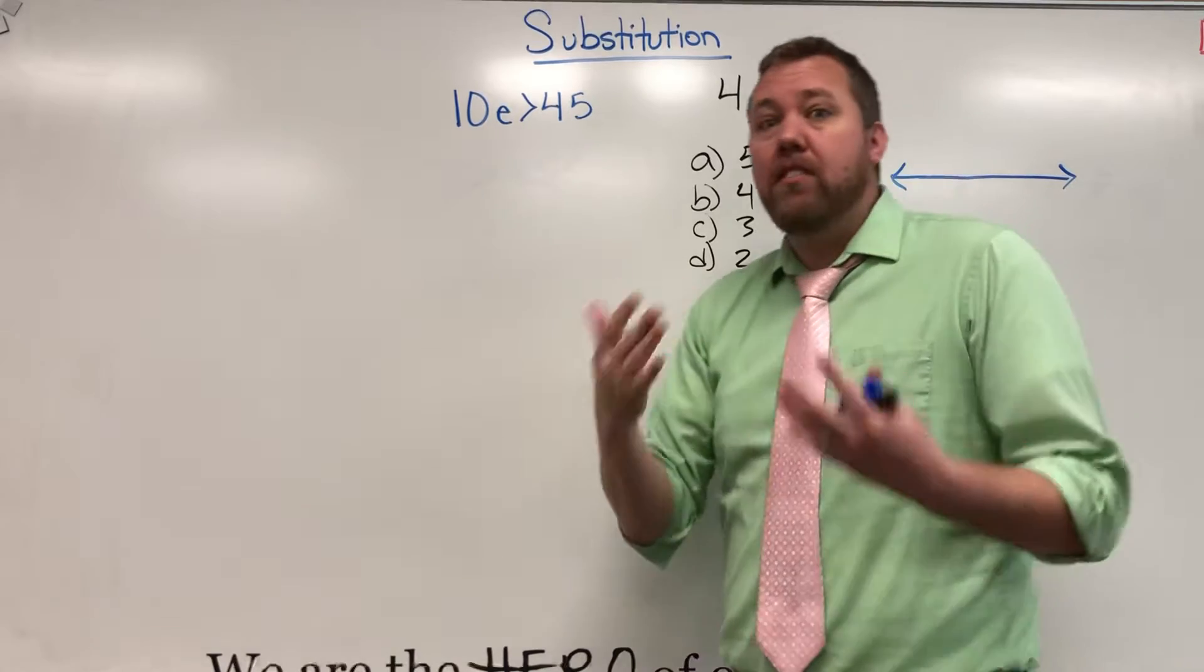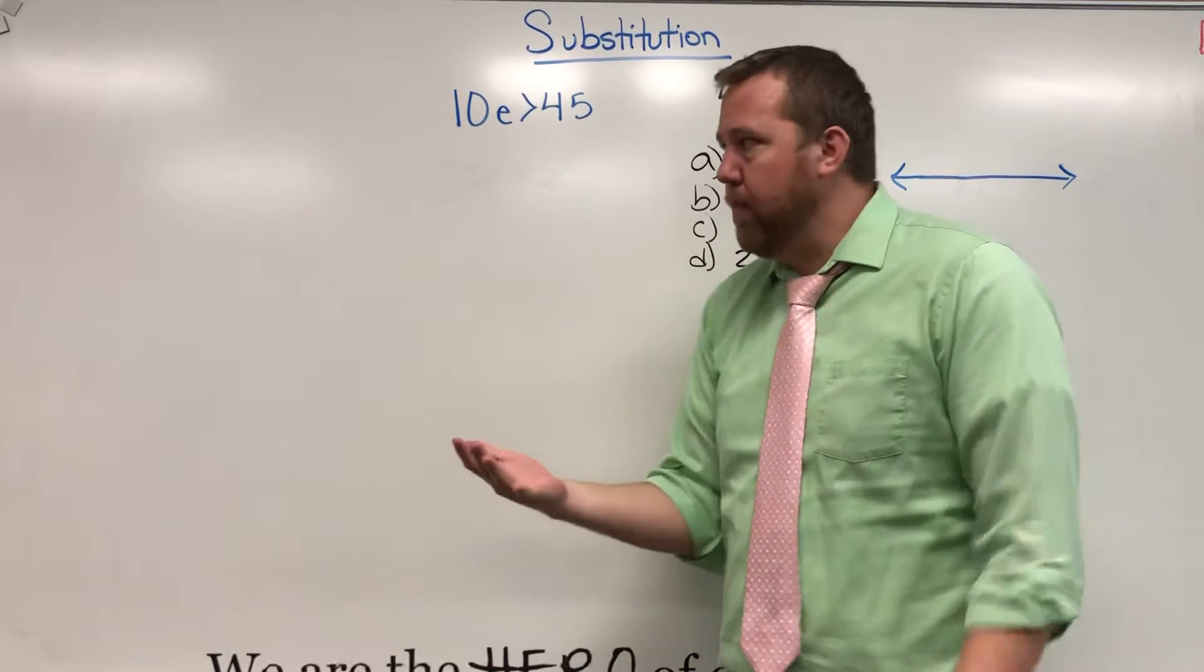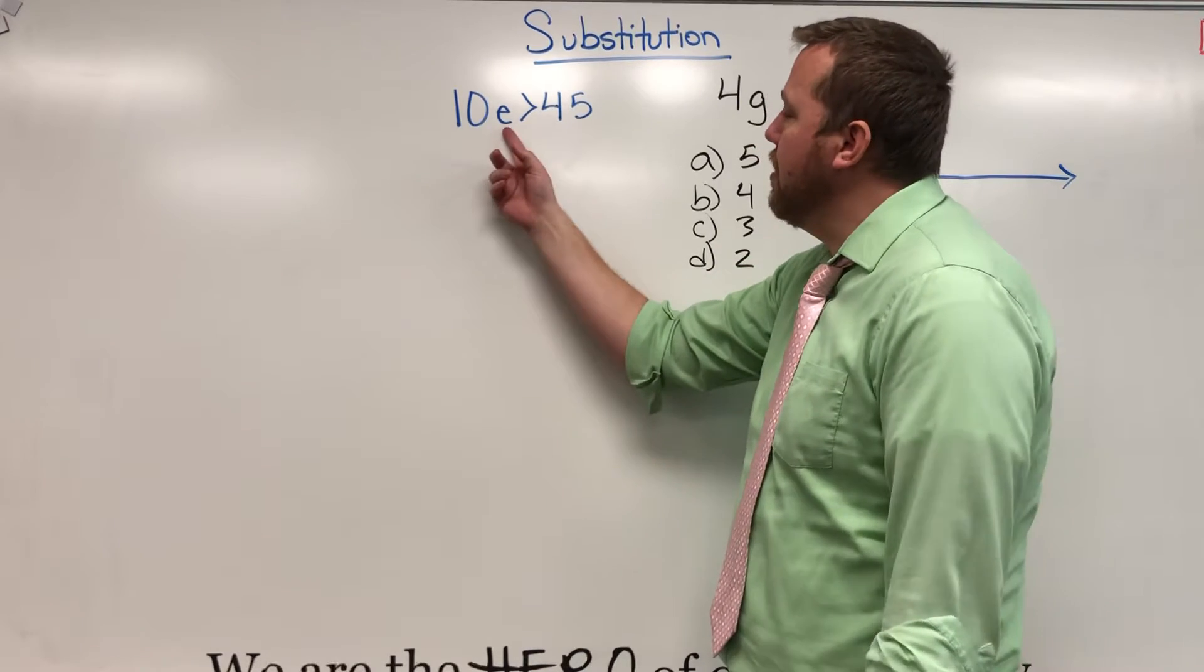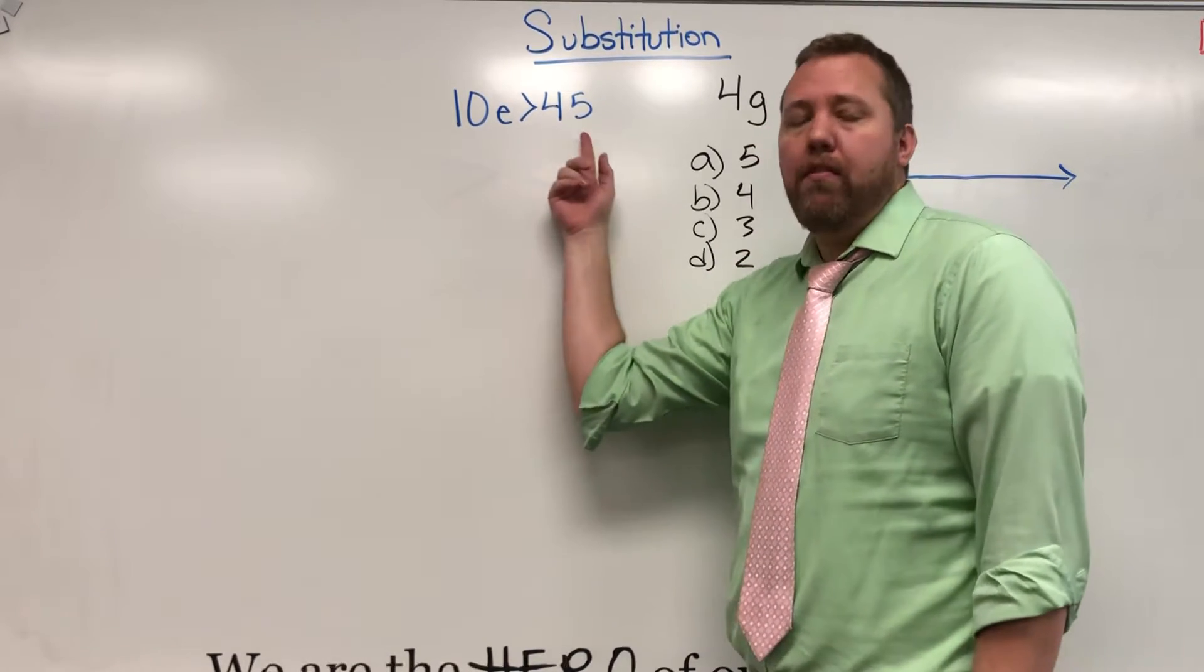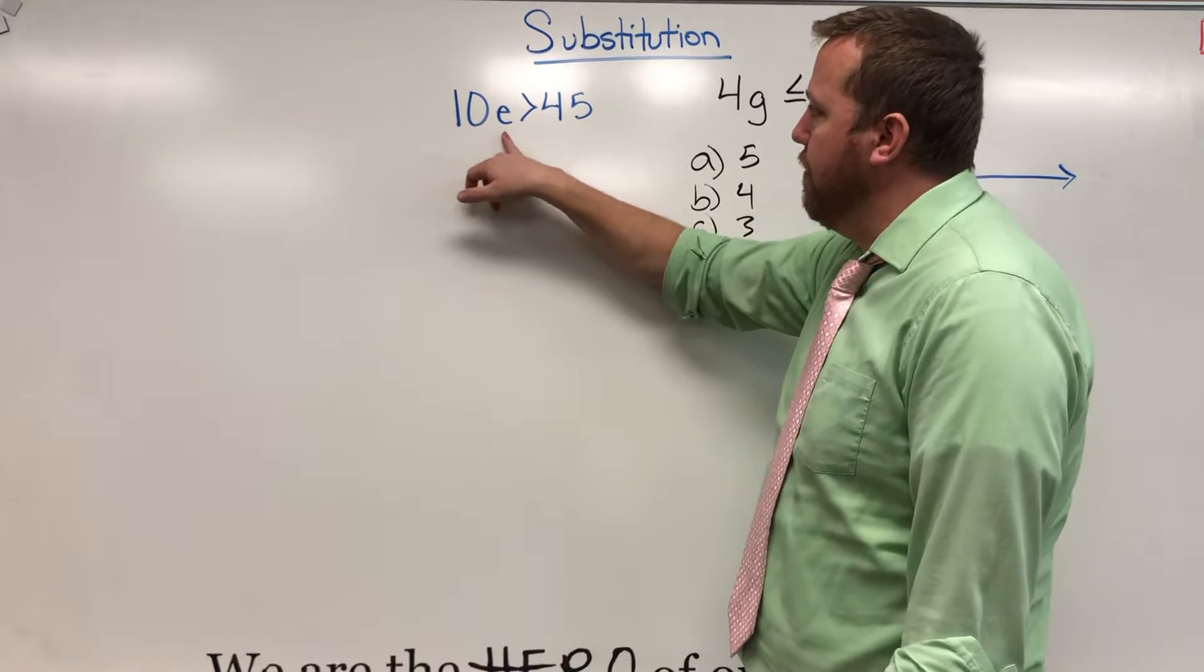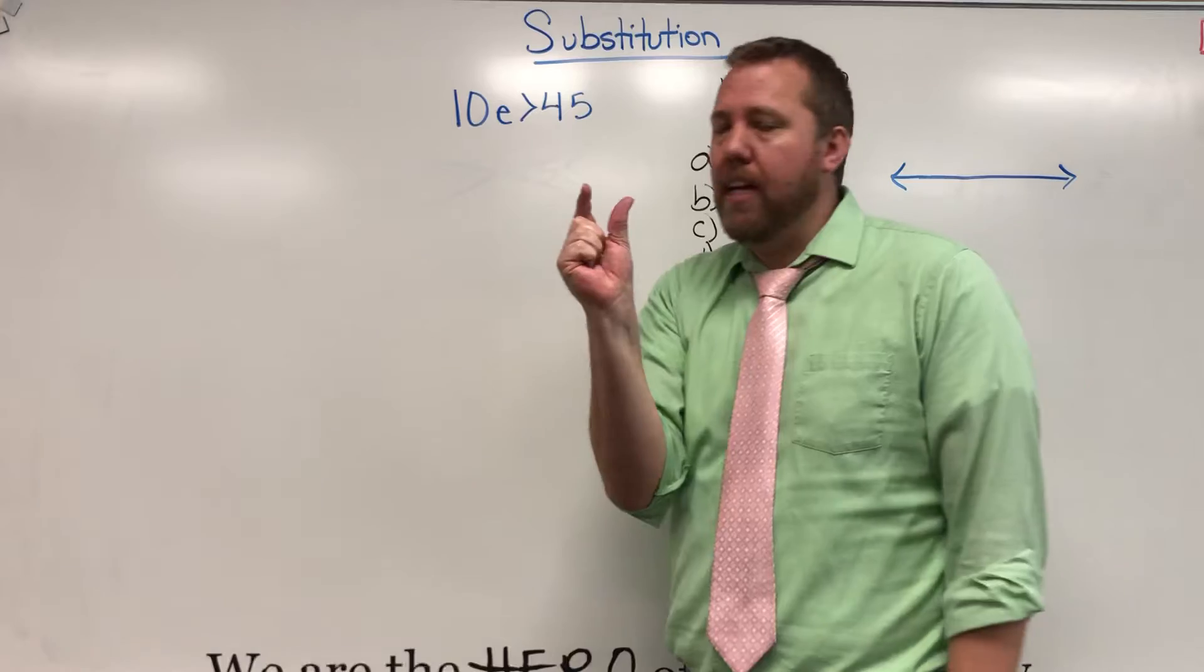10e, 10 times some number, because we don't know what it is, what the answer could be, it's a variable. 10 times some number is greater than 45. Remember that this is multiplied. If that's the coefficient and the variable together, that is multiplication.